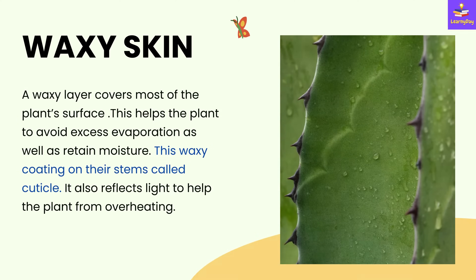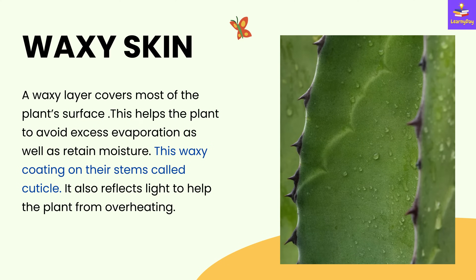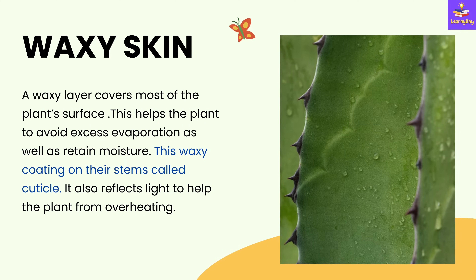Next is the waxy skin. A waxy layer covers most of the plant's surface. This helps the plant to avoid excess evaporation as well as retain moisture. This waxy coating on their stems is called the cuticle. It also reflects light to help the plant from overheating.